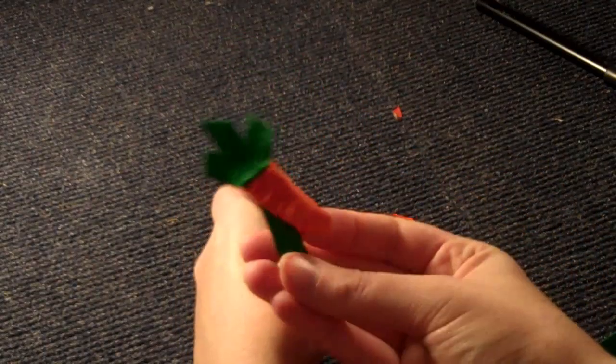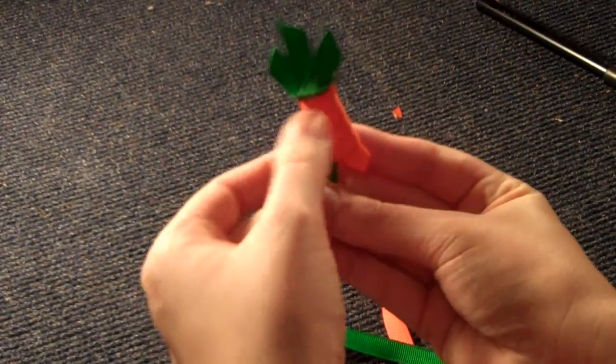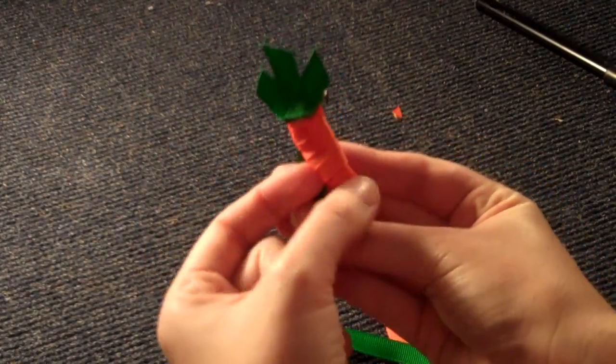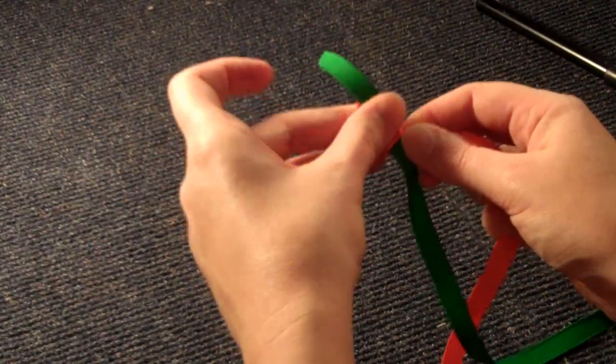About that size. That's what it looks like. Up under here is actually the green. I just wrapped it. That's just what you do. You keep doing that until you have a carrot.